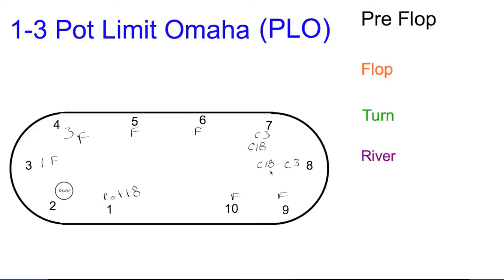Bringing the money to the middle, we have 3 for 18. 3 for 18 is 54 plus what's behind, giving us a total pre-flop pot of $60.